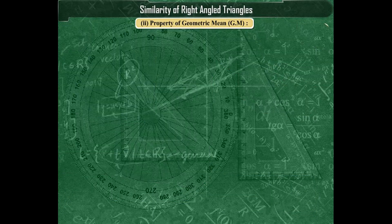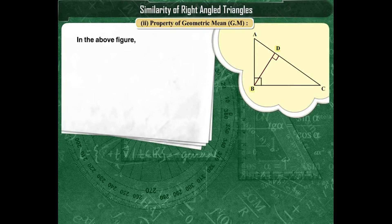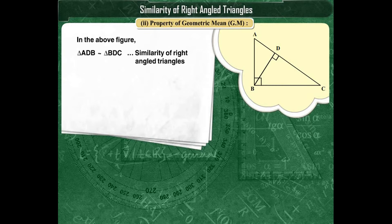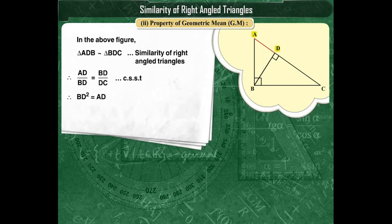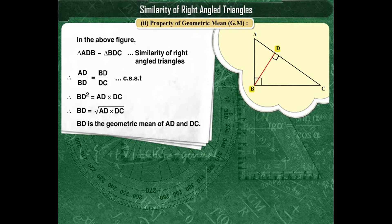In the given figure, segment BD is perpendicular to hypotenuse AC. Therefore, triangle ADB and triangle BDC are similar by the property of similarity in right-angled triangles. Hence, AD upon BD is equal to BD upon DC, as corresponding sides of similar triangles. By cross-multiplying, we get BD squared is equal to AD into DC. Therefore, BD is equal to the square root of AD into DC. Here, BD is the geometric mean of segment AD and segment DC.